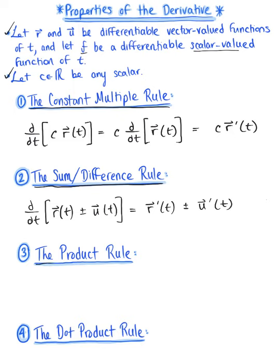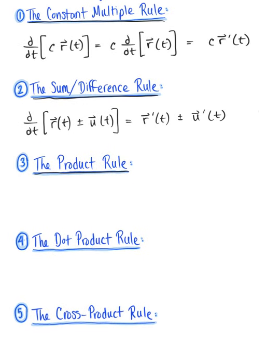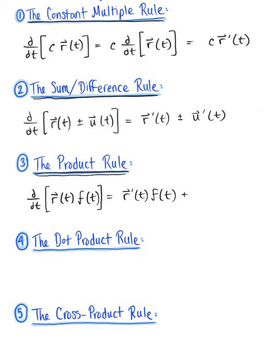The product rule is another good old friend, but here we have to be careful. Because there are several multiplication operations with vectors, when we talk about the product rule here, this is the product of a vector-valued function and a scalar-valued function. The derivative with respect to t of vector r of t times scalar f of t equals the derivative of r of t times f of t, plus the original r of t times the derivative of f of t.